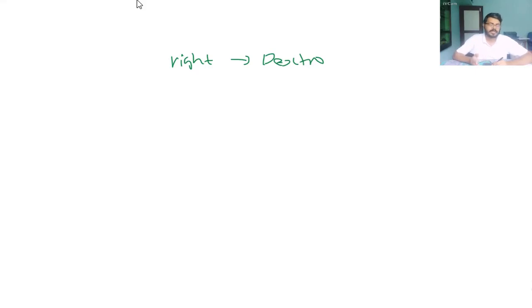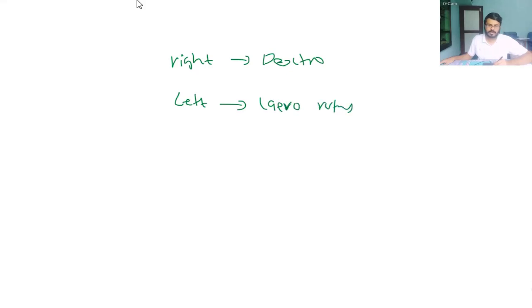If the plane of polarization turns towards the left when viewed against the direction of light, then we call it levorotatory. Levorotatory, in Latin, means left. Liquids and solutions of optically active substances rotate the plane of polarization.